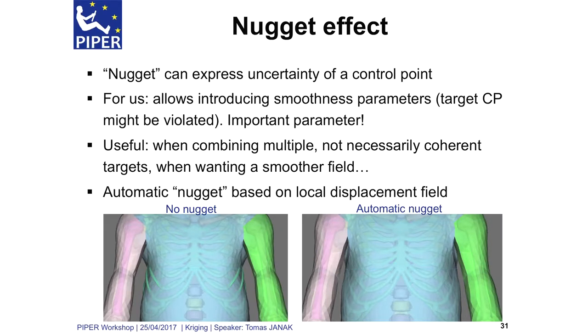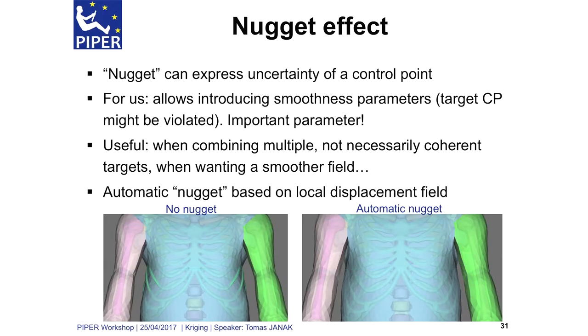Another tool in our toolbox is what is called the nugget effect. The kriging interpolation is governed by the covariance of the points, and the basic assumption is that the variance at the control points is zero because you know the values. What nugget allows you to do is set some non-zero variance at the control points — basically, it allows you to say that you are not completely certain that the values you have at the control points are correct, so the transformation is allowed to violate the target a little bit.